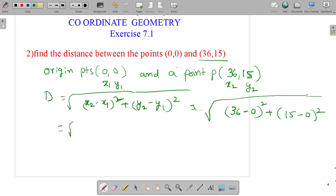Equals root of 36 squared plus 15 squared. 15 squared is 225. What about 36? 36 into 36.